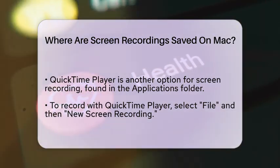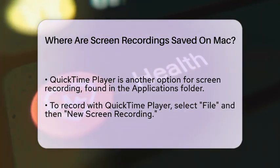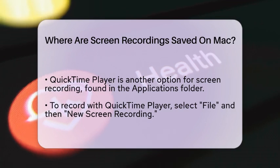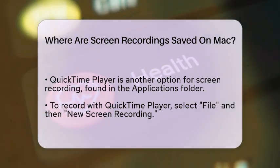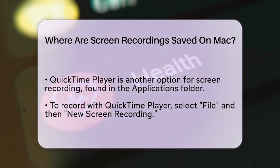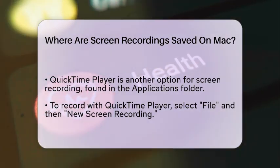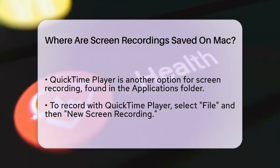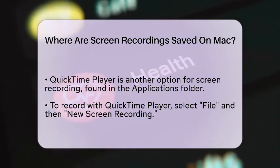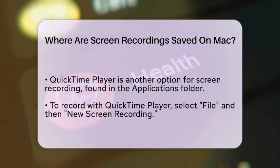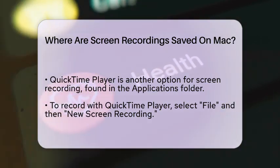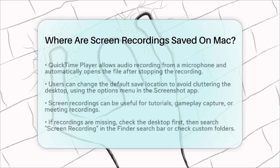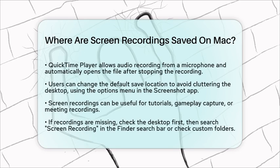If you prefer not to have your desktop cluttered with screen recordings, you can easily change the default save location. Use the Options menu in the Screenshot app to select a different folder, like your Documents or Downloads folder. This way, you can keep your files organized and manage your recordings more effectively.